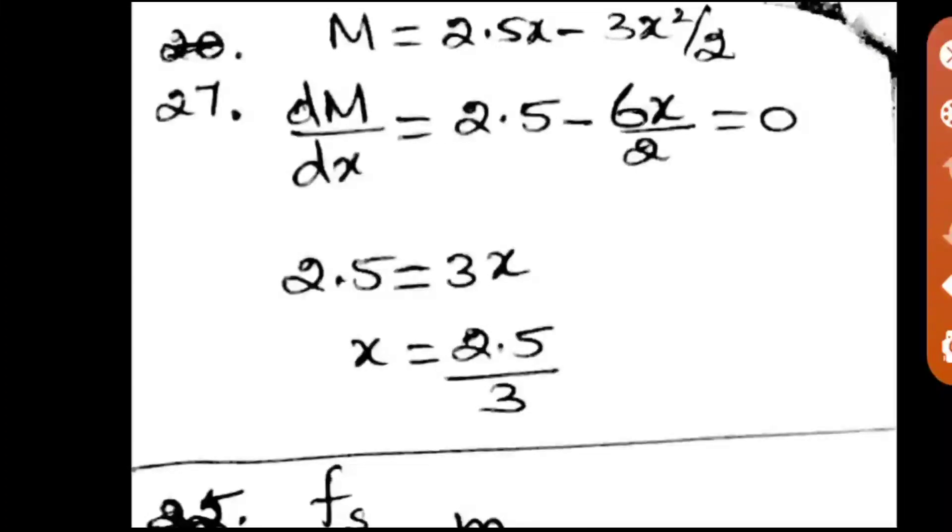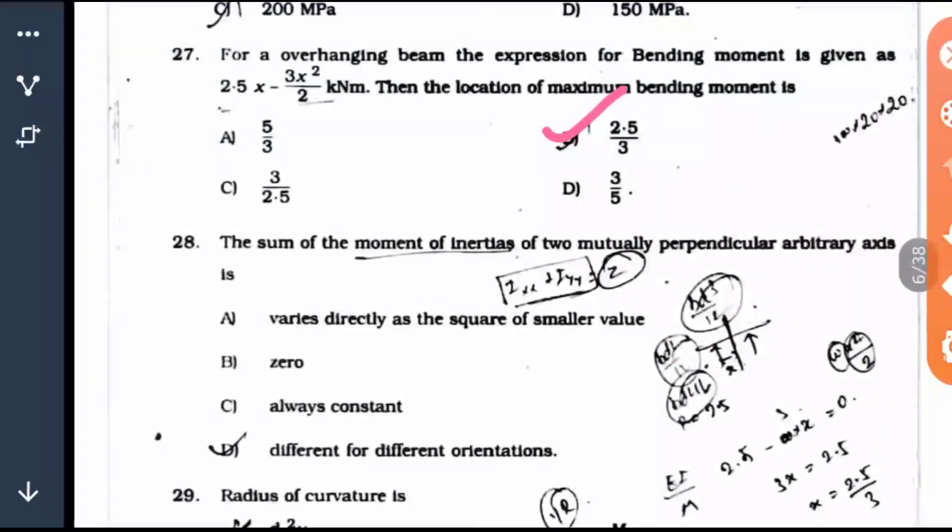M is given as 2.5x minus 3x square by 2. On differentiating we get 2.5 minus 3 times 2x, so it is 6x by 2. You get 2.5 minus 3x equals 0 because this is your shear force and you're equating it to 0. So 2.5 equals 3x, x equals 2.5 by 3. Here option B is the right answer.